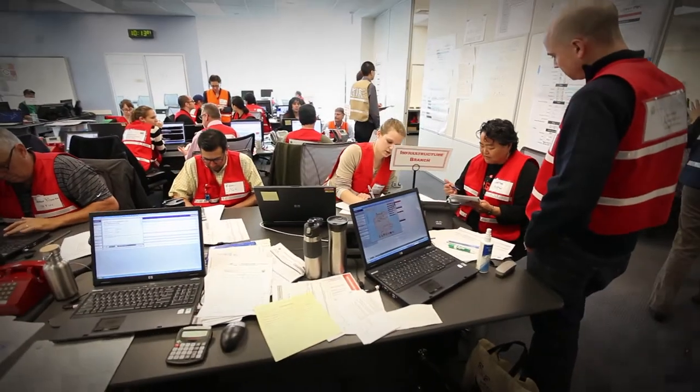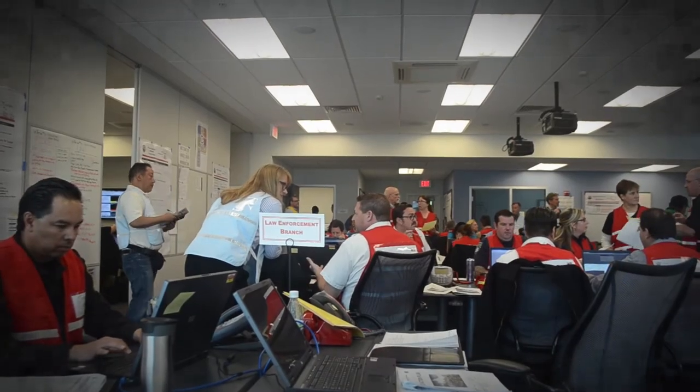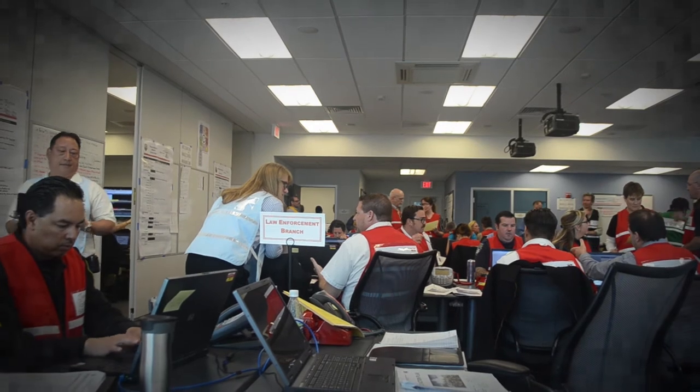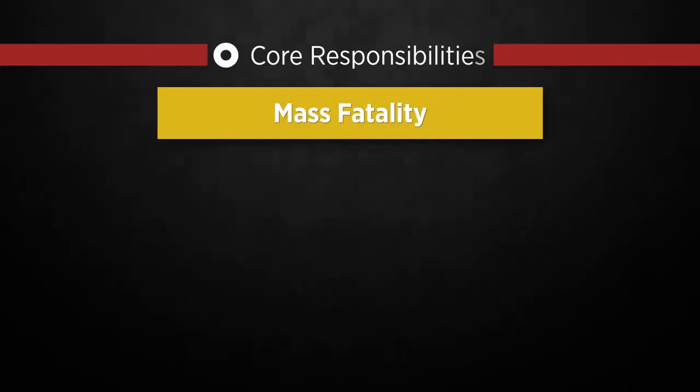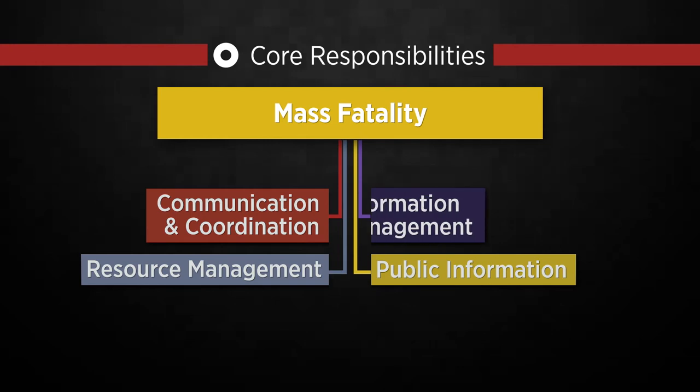In the EOC, you will most likely have a position in the law enforcement branch within the operations section to support the coroner operations through the operational phases we just reviewed. In a mass fatality event significant enough to actually do a full EOC stand-up, the coroner's office would have an employee assigned to and working out of the EOC's law enforcement branch, to help facilitate the change from a search and rescue operation to a search and recovery operation. Your responsibilities include communication and coordination, resource management, public information, and information management.